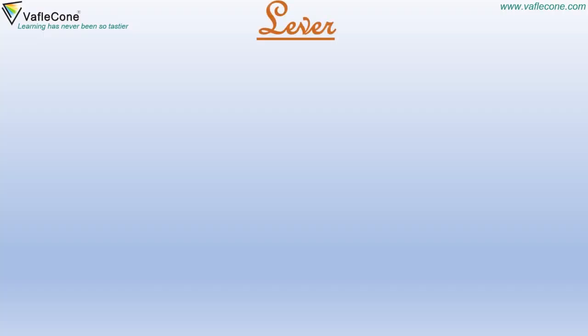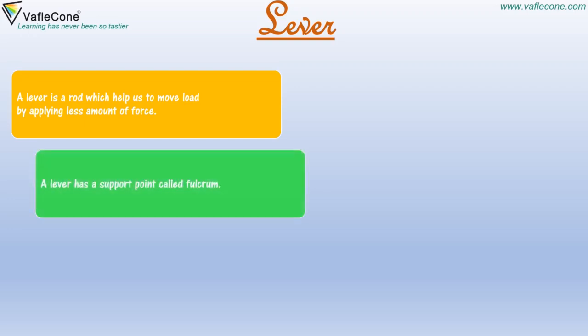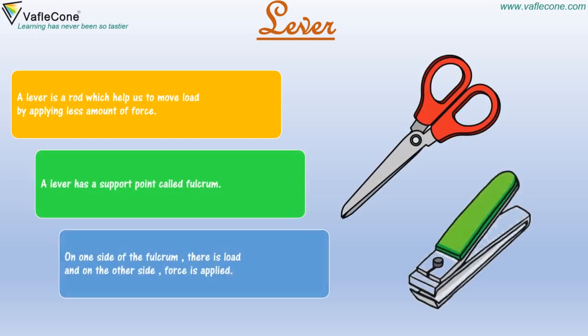A lever is a rod which helps us to move a load by applying less amount of force. A lever has a support point called fulcrum. On one side of the fulcrum there is a load and on the other side force is applied.